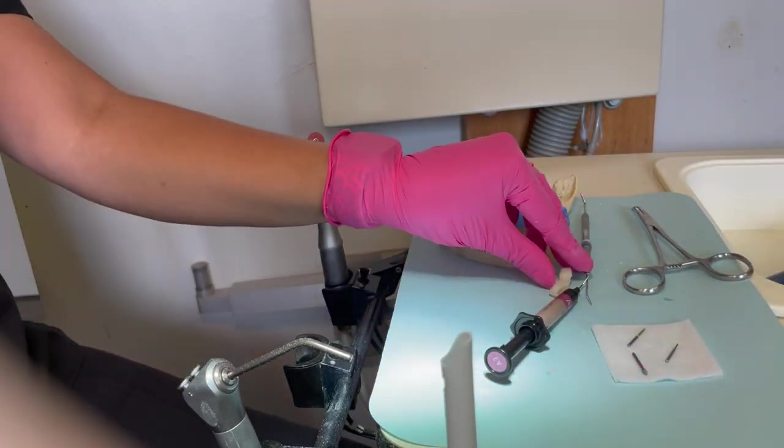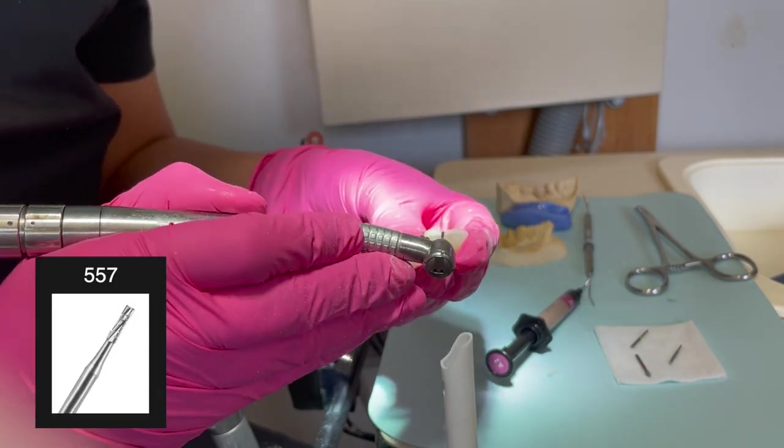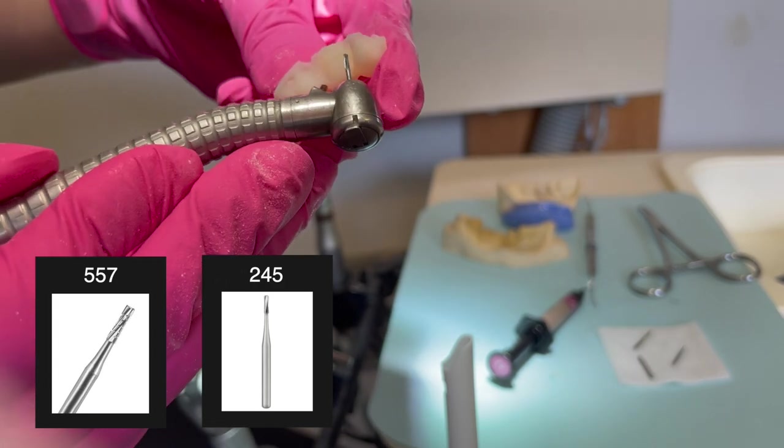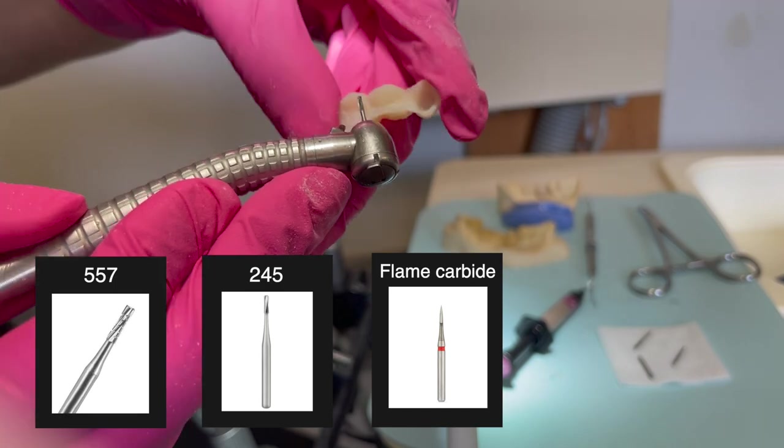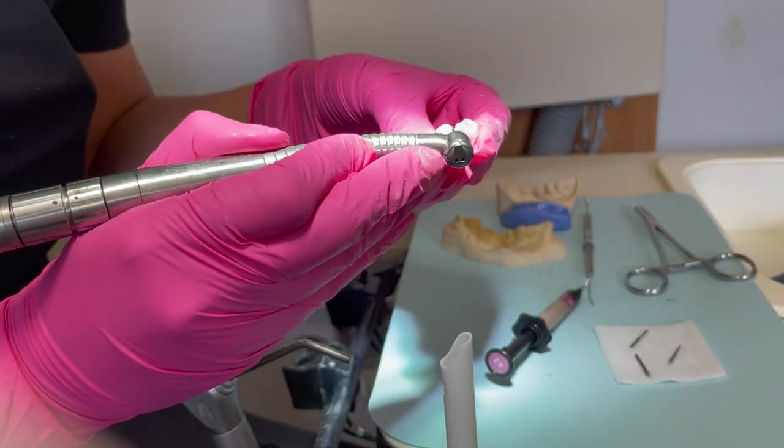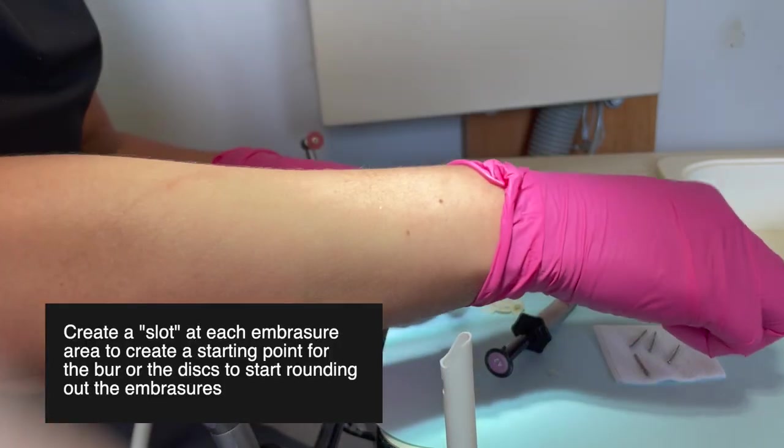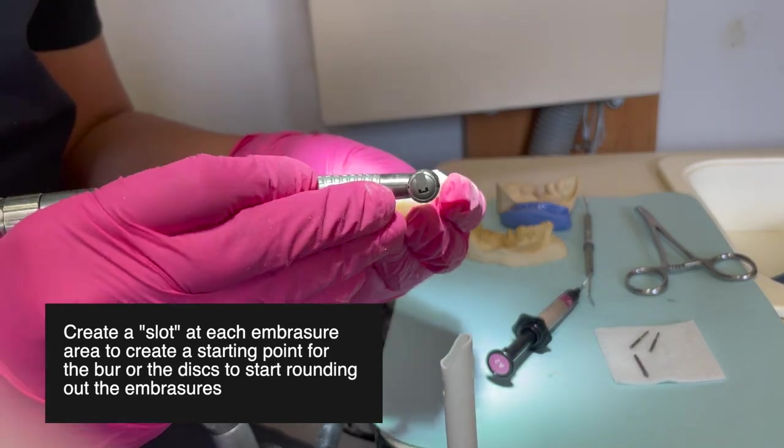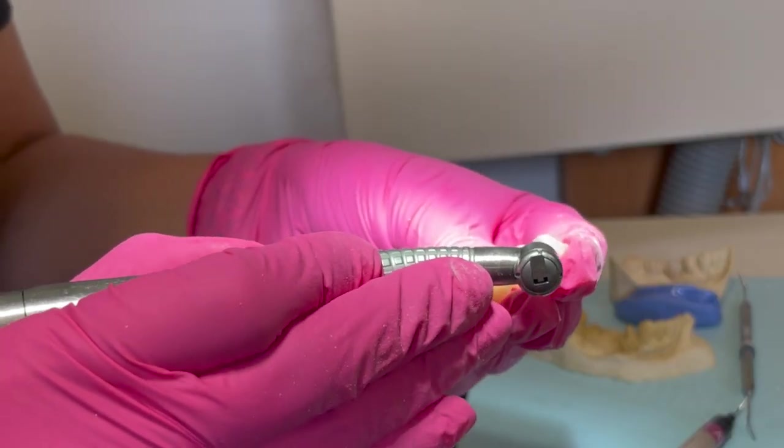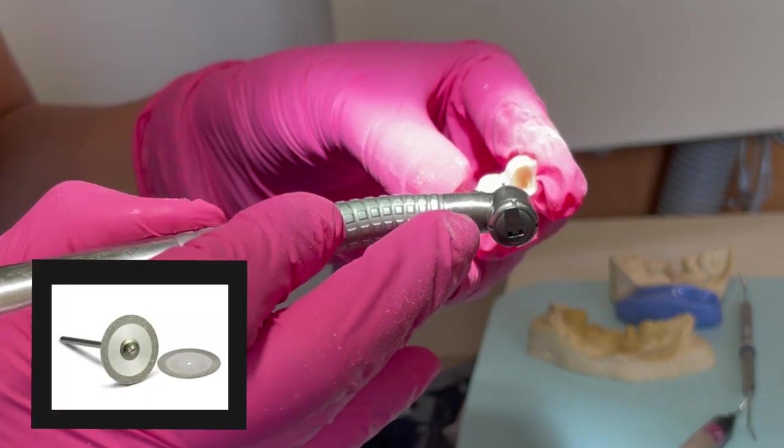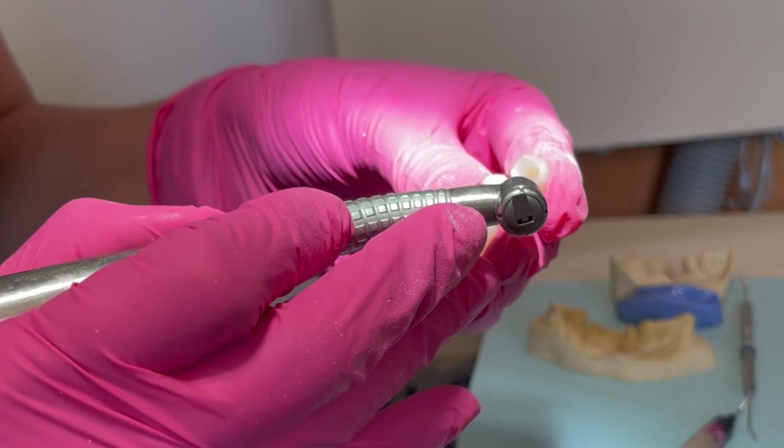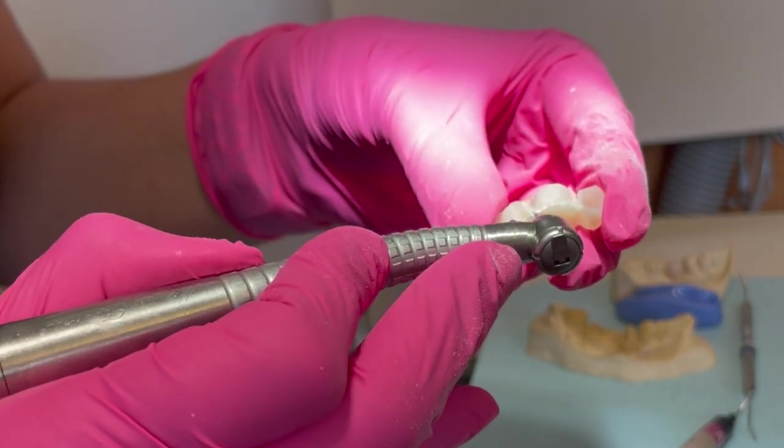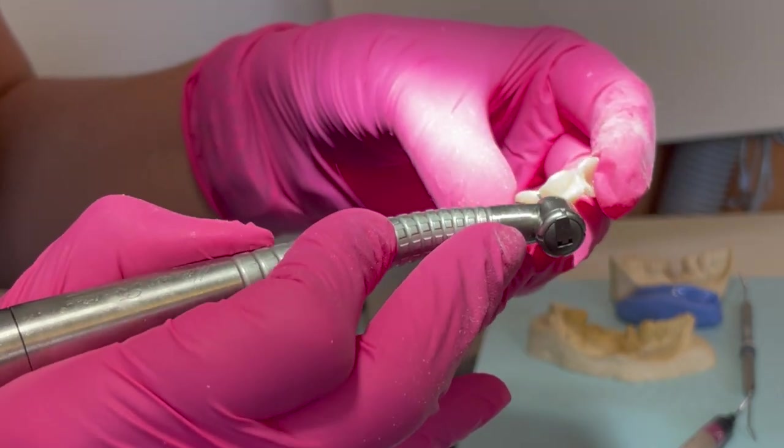To start working on the embrasures, I'm gonna switch gears into using either a 557 or 245 or something like a flame, just because I want to start rounding off that embrasure area. Mainly what I'm doing now is creating a slot, and that slot is for the disc that I'm going to be using. You could also use a metal disc to create that slot and start shaping better, but I didn't have a metal disc so I'm using the burrs to help me out.